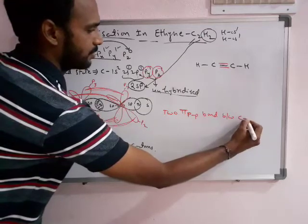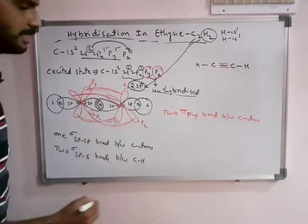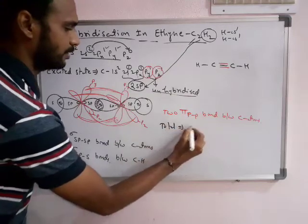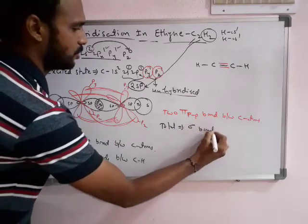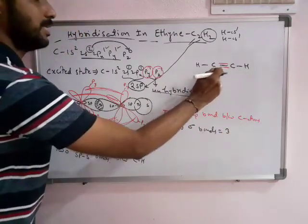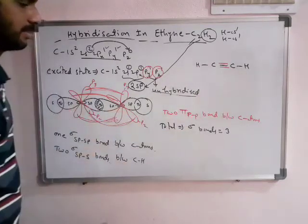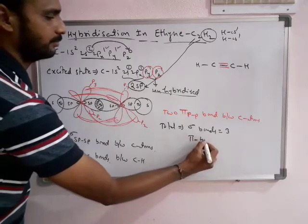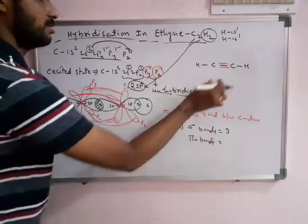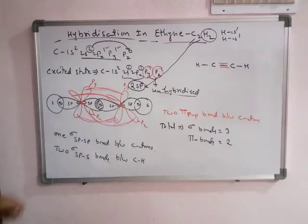In total, there are three sigma bonds: one sigma sp-sp bond between the carbon atoms, and two sigma sp-s bonds between carbon and hydrogen. There are two pi bonds — two pi pp bonds — between the two carbon atoms.